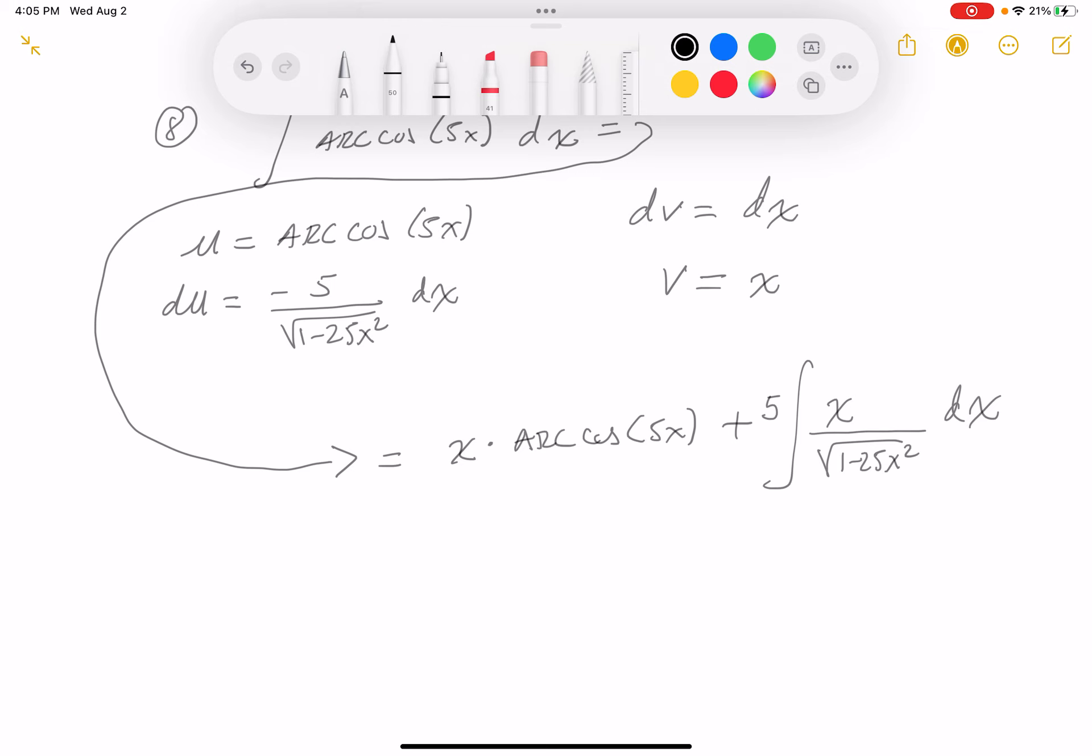So let's put it down. So u equals, I'm going to say, 1 minus 25x squared, du is going to be minus 50x dx. Alright?